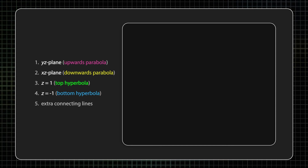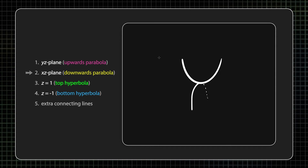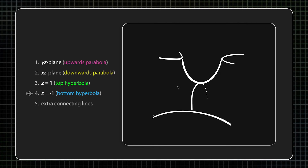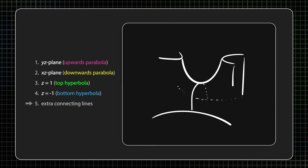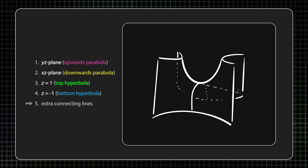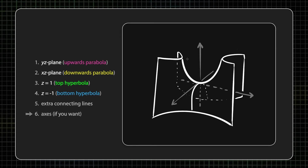Let's do it again for practice. We draw the upwards parabola, and then the downwards parabola, the hyperbola on the top, the hyperbola on the bottom, and then some extra edges to connect things up. And remember from my sketching video: if you want to draw this with axes, draw the surface first and then add in the axes afterwards. It'll just turn out better that way.